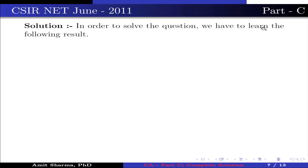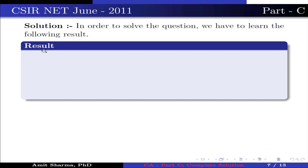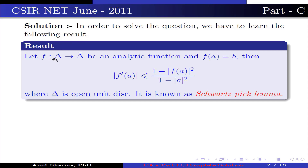In order to solve the question, we need the following result. Let f from Δ to Δ̄ be an analytic function and f(a) = b. Then |f'(a)| ≤ (1 - |f(a)|²) / (1 - |a|²), where Δ is the open unit disk. This is known as the Schwarz-Pick lemma.